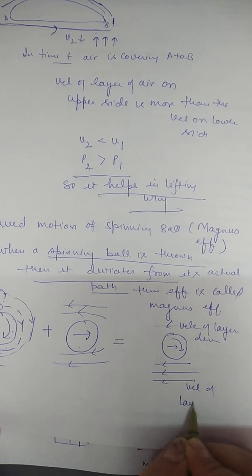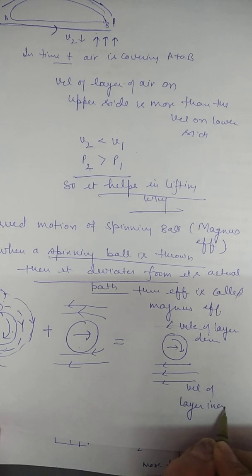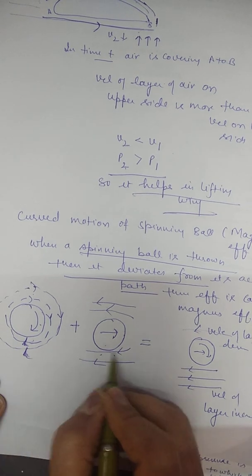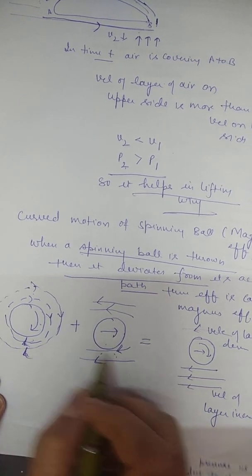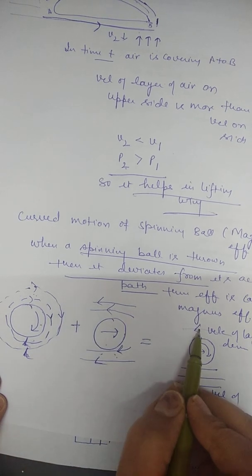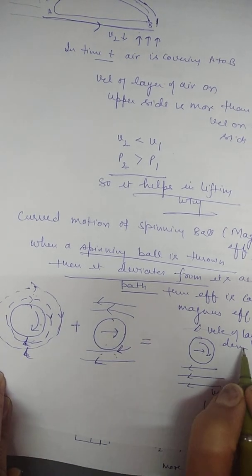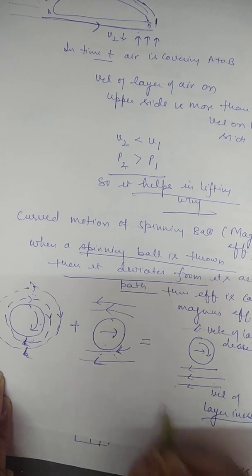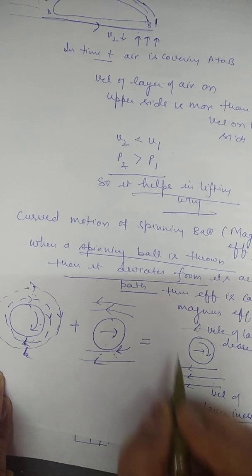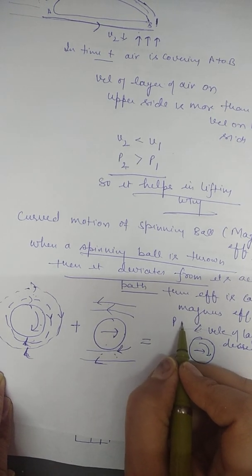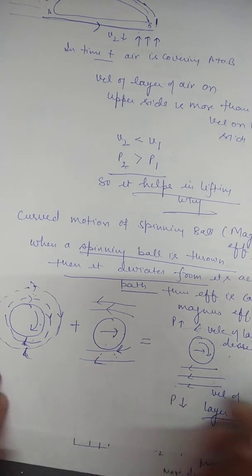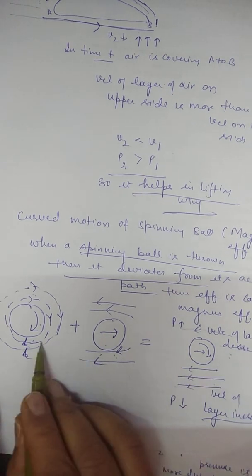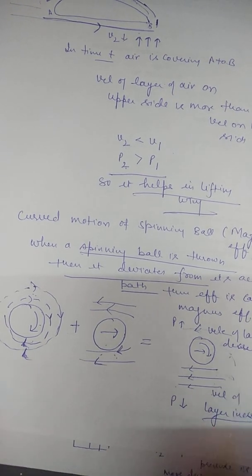On the lower side, the directions are the same, so the velocity of the air layer increases. Since velocity increases below, pressure decreases below, and pressure increases above. This pressure increase on the upper side causes a change in the path of the ball — instead of going straight, the ball deviates from its actual path.